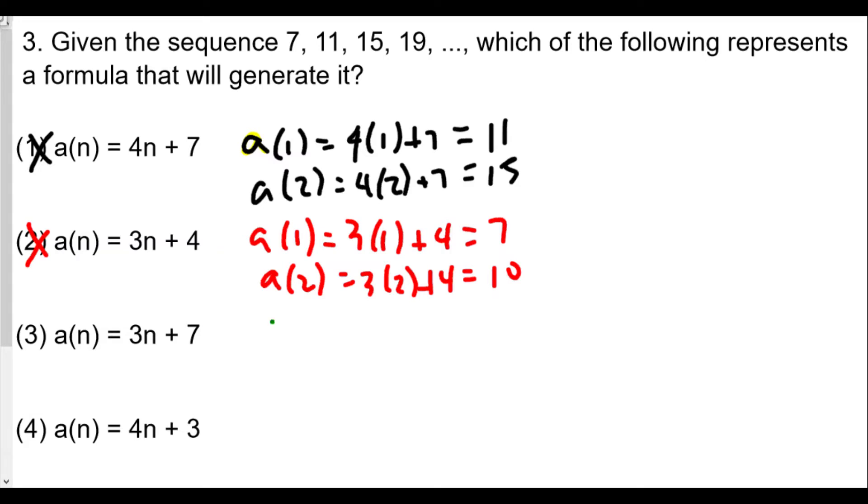For choice 3, we'll do A1. 3 times 1 plus 7 is equal to 10. Nope, that's not it either, because we only need 7 for the first term. So we're hoping it's 4. If not, we have some trouble. Here we go.